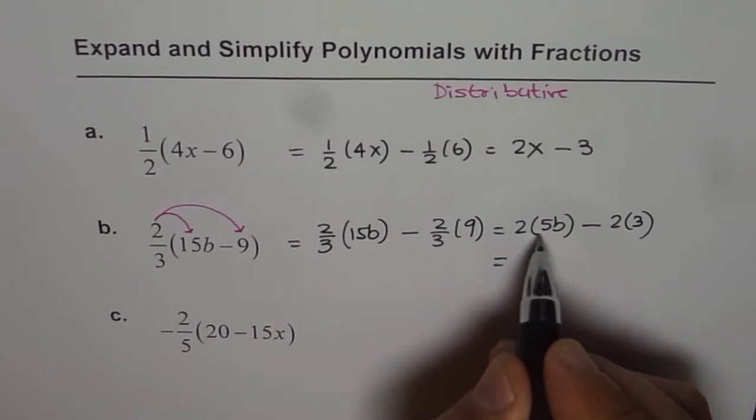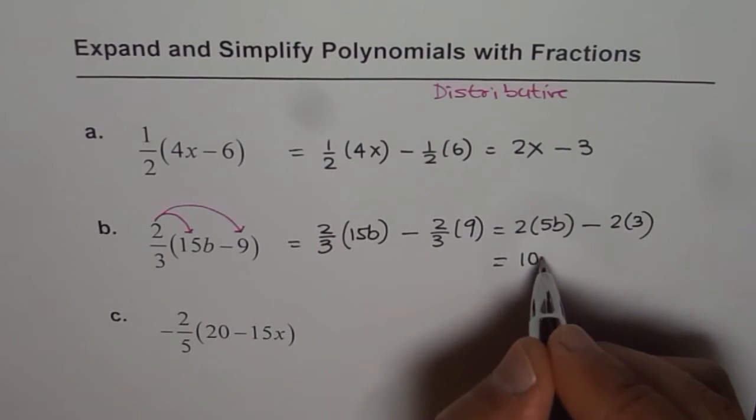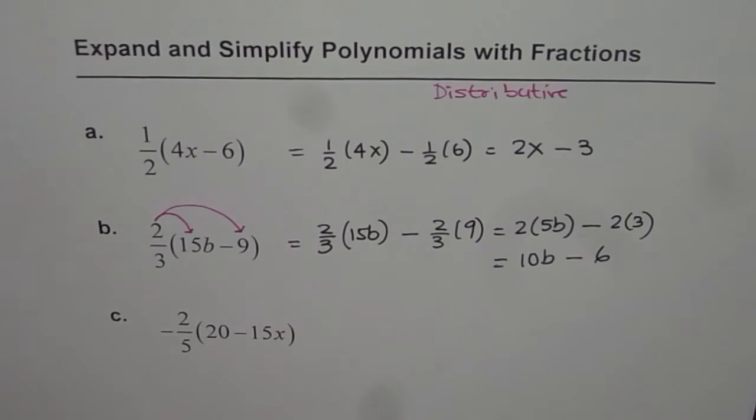Now 2 times 5 is 10. So we get 10b minus 6 as our answer.